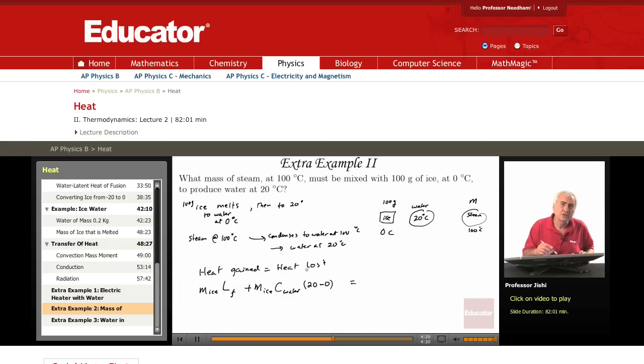The heat lost: first steam, its mass is M, condenses to water. So the heat lost is the mass of steam times the latent heat of vaporization of water.